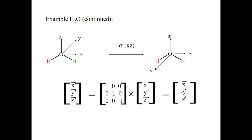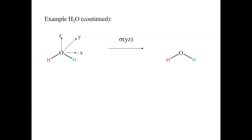Now let's look at the second mirror plane, the σ(yz) mirror plane, which bisects the molecule and contains both the z-axis and y-axis. Let us consider how the vectors change as this symmetry operation is carried out. In this case, the x-vector is not part of the yz mirror plane.